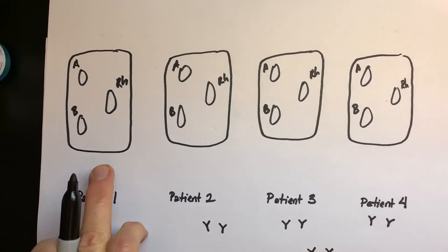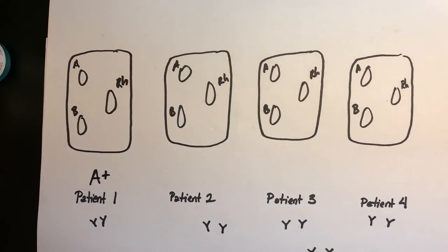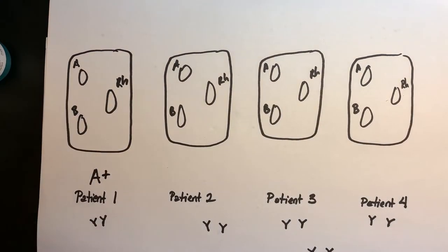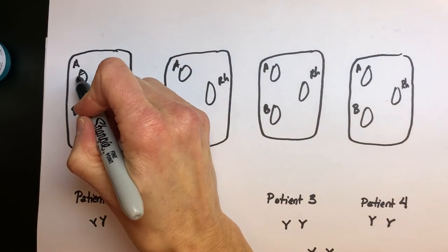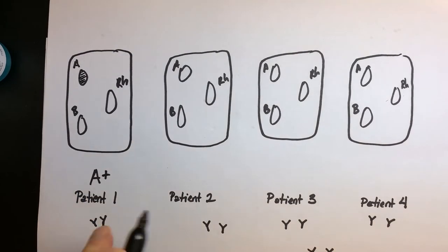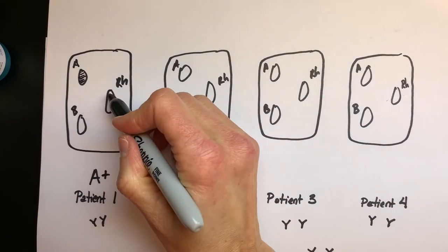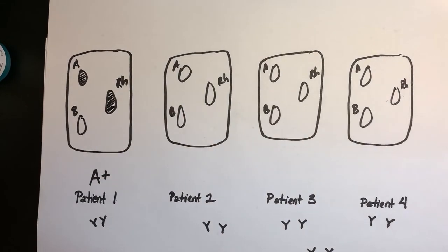Where would I shade in a reaction on this tray? Where would I shade in the reaction that showed me where there was a fight, or where there was a reaction between that patient's blood, the antigens, and then the antibodies that I added? And remember I added A antibodies here, B here, and then RH here. So if they're A positive, I want to shade in where the reaction took place. It took place at A, and it took place at RH. There's my positive. So that's what an A positive reaction would look like.